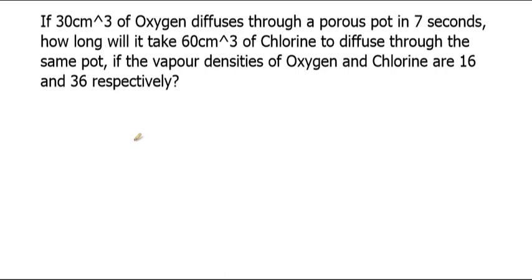If 30 centimeter cube of oxygen diffuses through a porous pot in seven seconds, how long will it take 60 centimeter cube of chlorine to diffuse through the same pot? The vapor densities of oxygen and chlorine are 16 and 36 respectively.